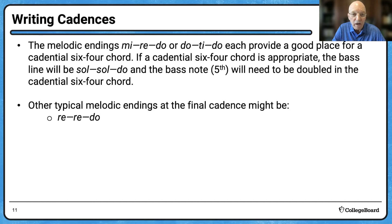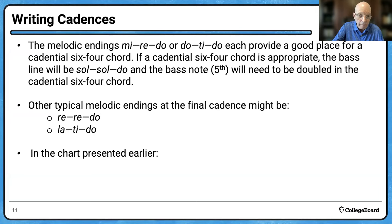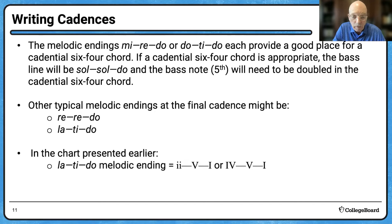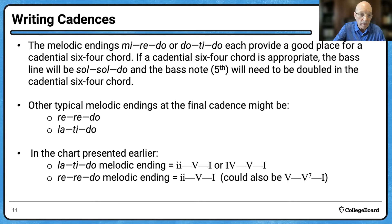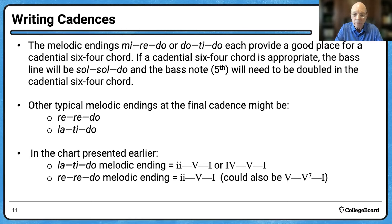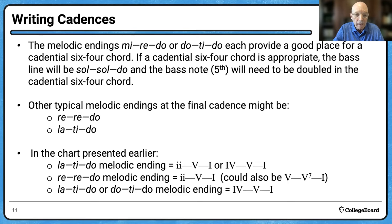Other typical melodic endings at the final cadence might be re-re-do or la-ti-do. La-ti-do equals a ii to V to I, or a IV to V to I. My first choice is always ii to V to I if it's possible, because la is in the ii chord. A re-re-do melodic ending is ii-V-I — that one could also be V to V7 to I, just using the V and V7 rather than two triad fives in a row. La-ti-do or do-ti-do could be IV-V-I as already mentioned.